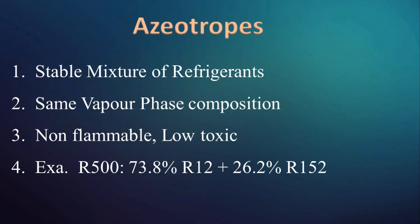Azeotropes are stable mixtures of refrigerants. Their vapor phase retains identical composition over a wide range of temperatures. They are usually non-flammable, low toxic, and non-corrosive mixtures of gas. For example, R500 is a mixture of 73.8% R12 and 26.2% R152. R500 has a fairly constant vapor pressure curve, with evaporator pressure of 1.37 bar and condenser pressure of 7.78 bar. It has a boiling point of minus 33 degree Celsius and latent heat of vaporization of 192 kJ/kg. Azeotropes find applications in commercial systems.